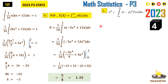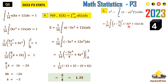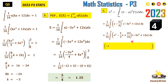The variance is defined as the integral from 0 to 2 of (x − μ)² · f(x) dx, where μ = 5/4. We expand (x − 5/4)² = x² − (5/2)x + 25/16, then multiply by f(x) = (1/16)(−3x² + 12x). There are other methods you can use, but this is the one used here.